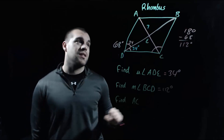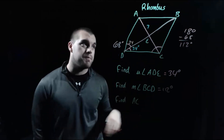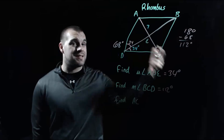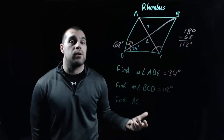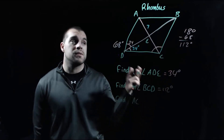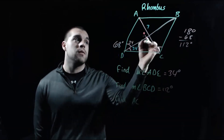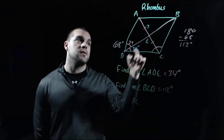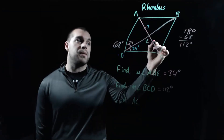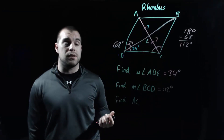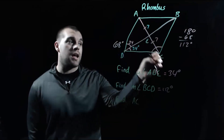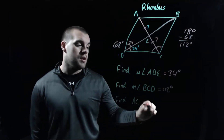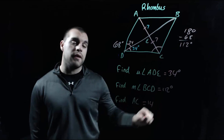Now the last thing we're going to find is the length from A to C. We're given the length from A to E as 7, and another property of a parallelogram says that diagonals bisect each other. So this piece has to be congruent to that piece — if the top piece is 7, this bottom piece also has to be 7. We want the entire length from A to C, so we add those two things together. That length should be 14.